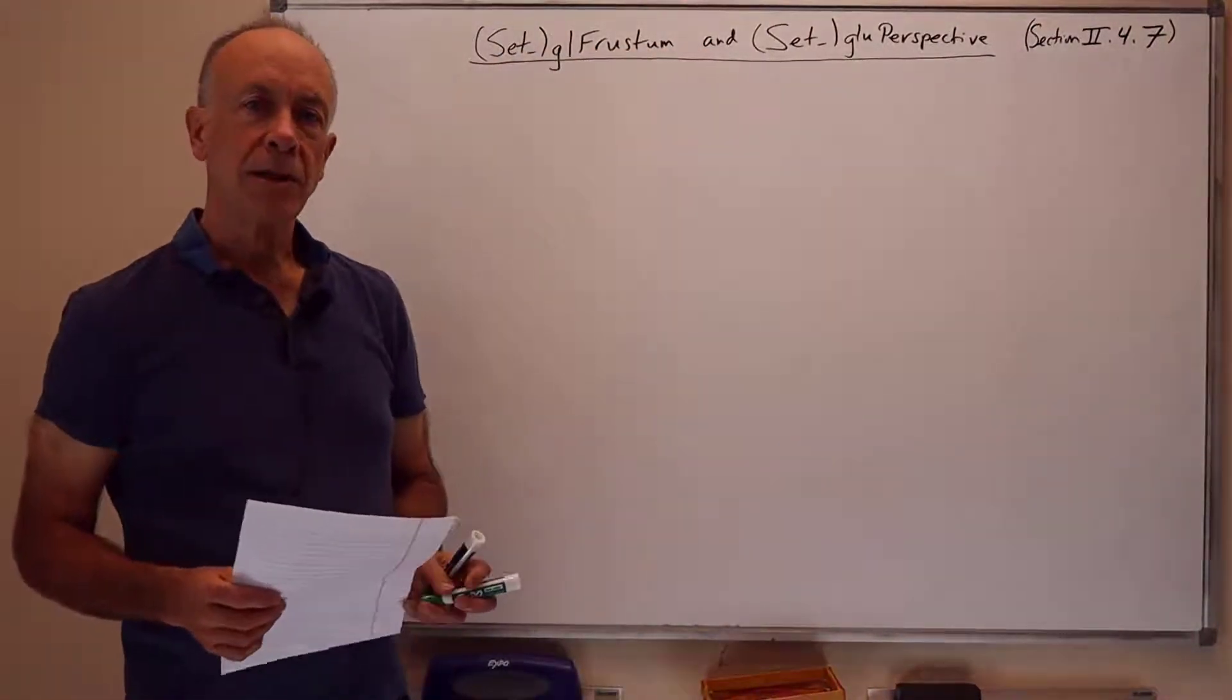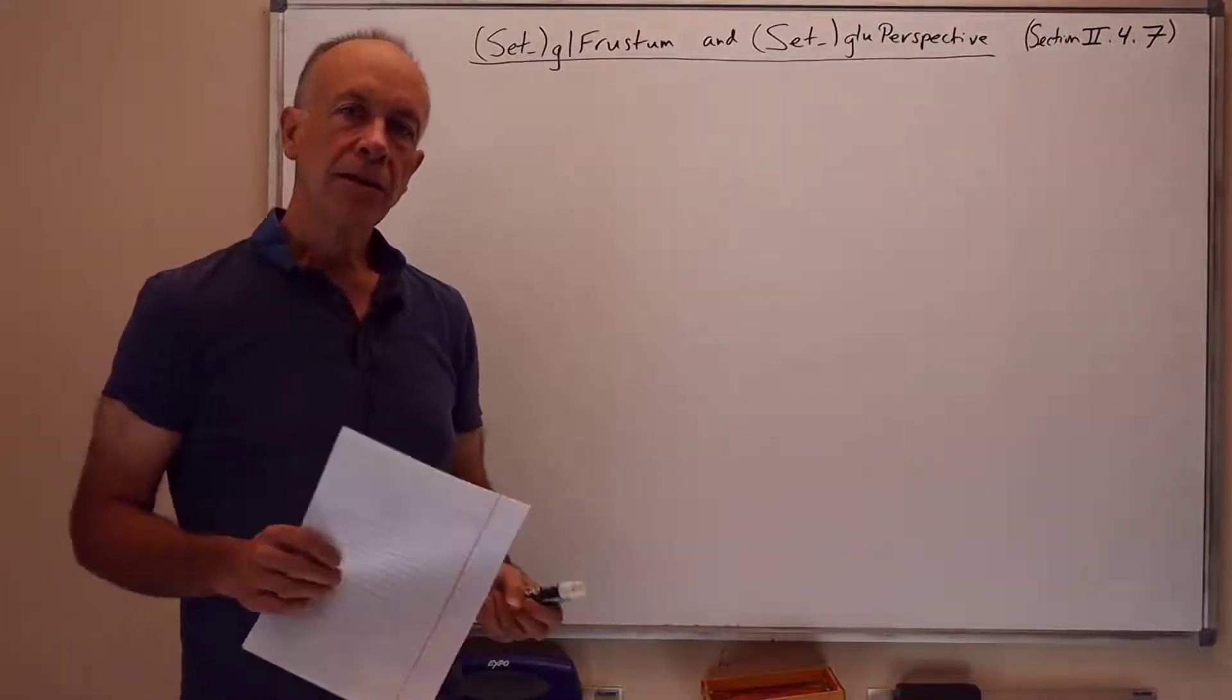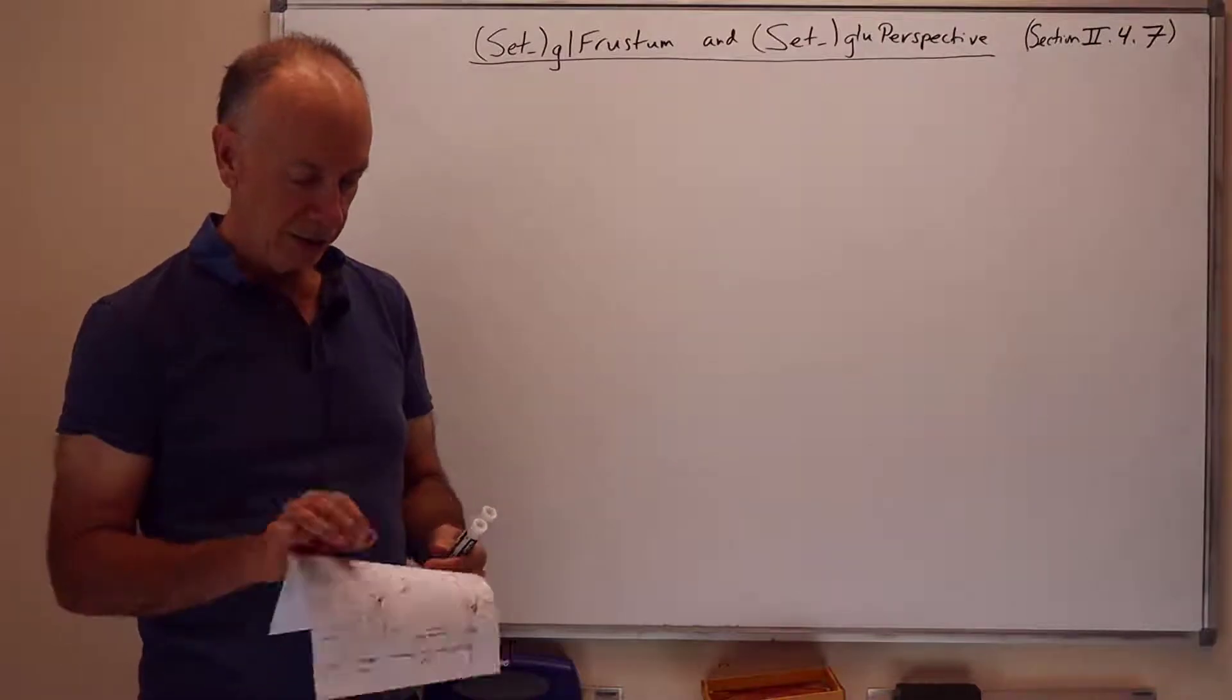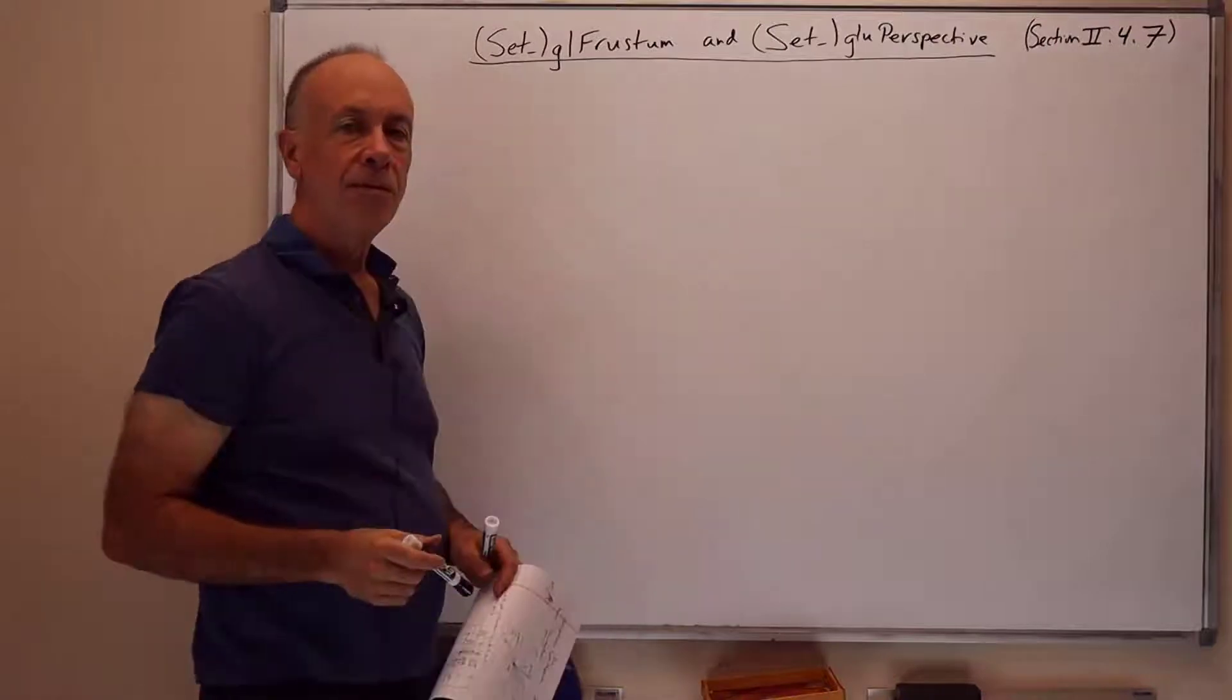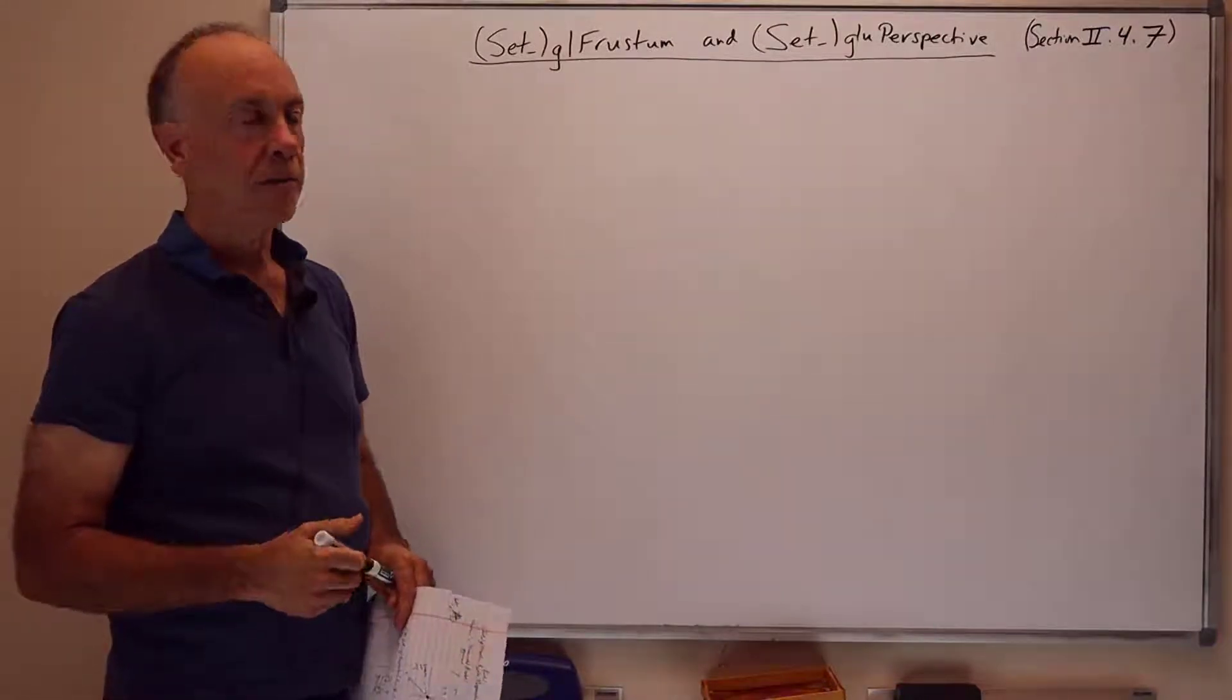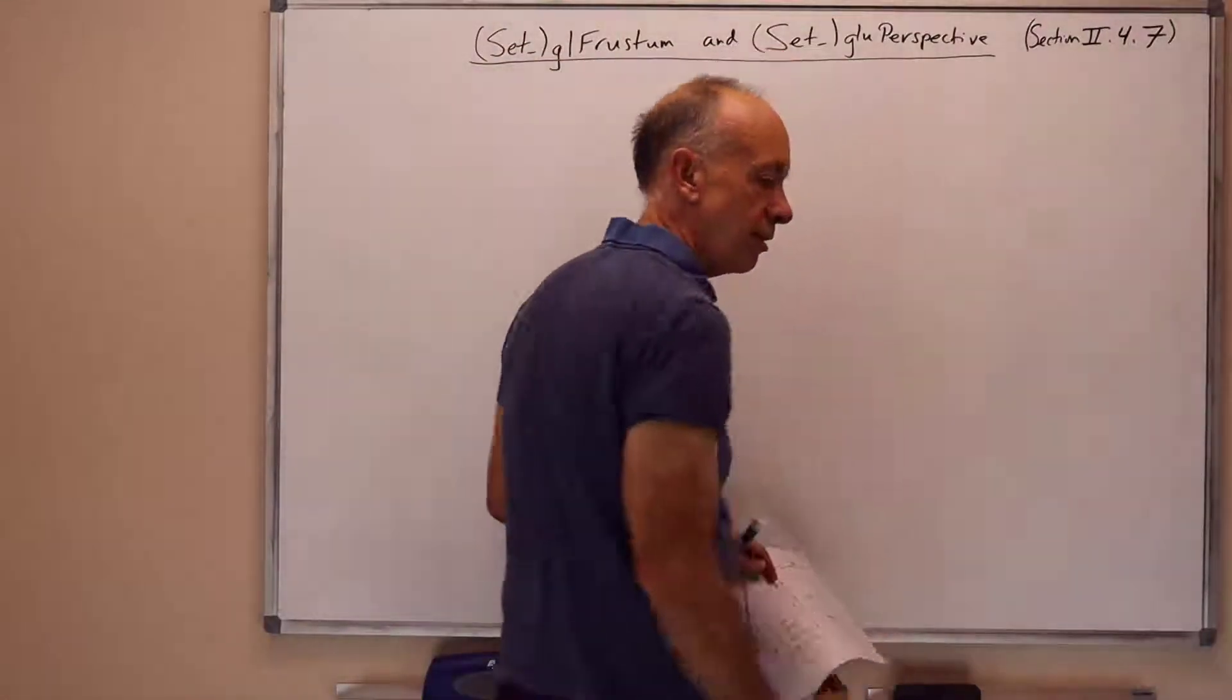Hi, this presentation will talk about some of the built-in function calls that make it easy to build perspective matrices. The earlier presentation already discussed the theory behind how to form perspective matrices. These functions make it easy to actually use these in a program. They're based on the old OpenGL functions, gl-frustum and glu-perspective. The software, the linear algebra routines I provided for the course have versions called set gl-frustum and set glu-perspective. All these are described in section 2.4.7 of the PDF.